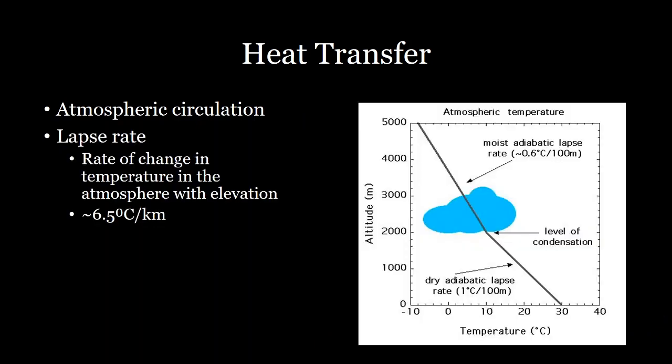Also, the lapse rate is a good way of seeing how different areas of the atmosphere are heated differently. And so as you move up in the atmosphere, you get colder and colder temperatures, at least in the troposphere, the lowest layer of the atmosphere. And generally that averages out to around 6.5 degrees Celsius per kilometer as you move up.